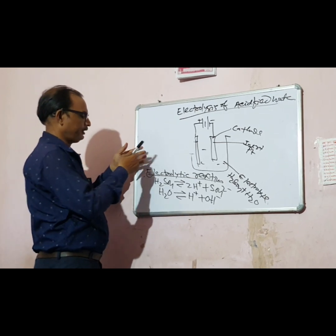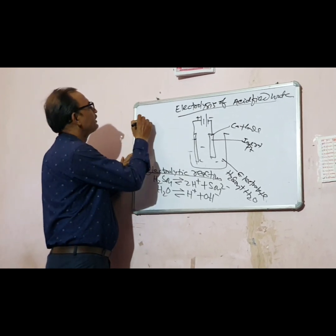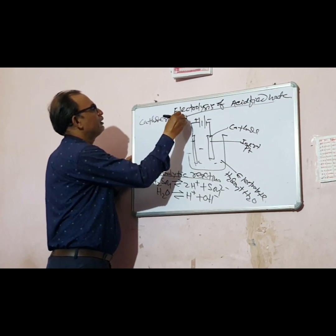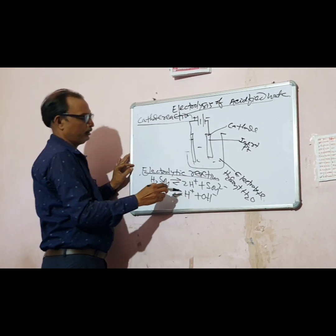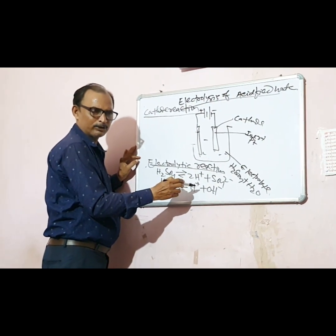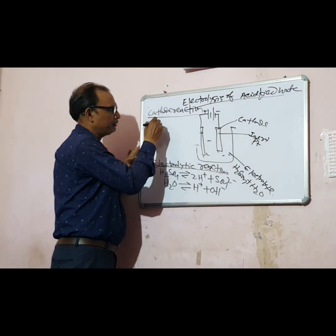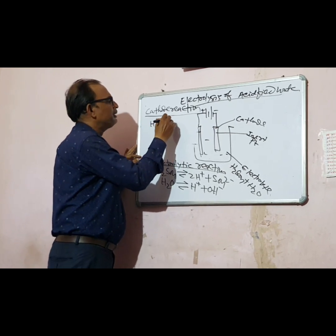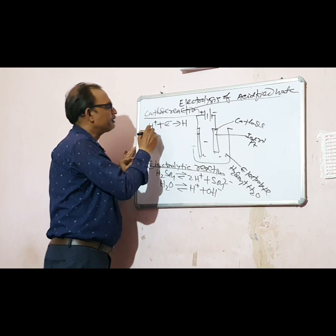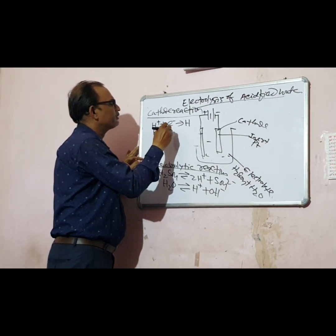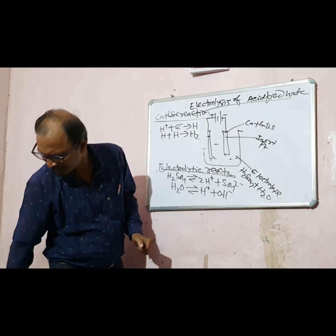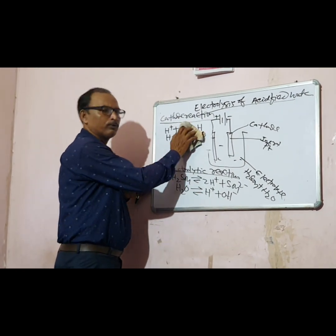Cathode reaction: to the cathode, H+ + e- gives rise to H. It will never remain in nascent condition — H + H gives H2. So hydrogen gas will be evolved at the cathode.